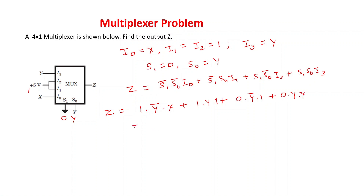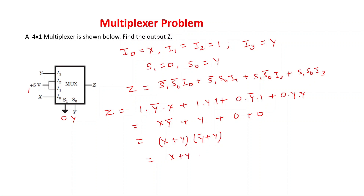From the substitution, the first term is XY', the second term is 1·Y = Y, and the last two terms are 0 (product with 0). So Z = XY' + Y. Using the distributive law, this expands to (X + Y)·(Y' + Y) = (X + Y)·1 = X + Y. Therefore, the output of this multiplexer is Z = X + Y.